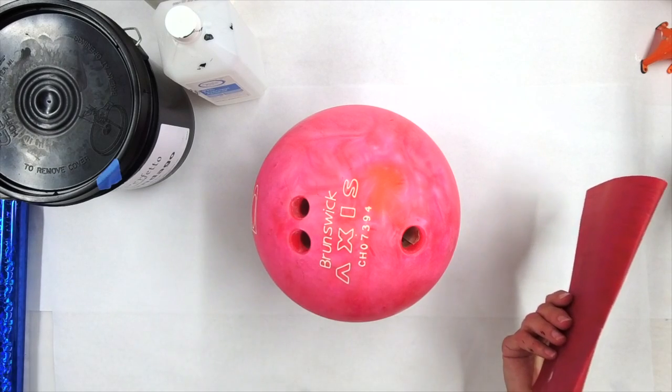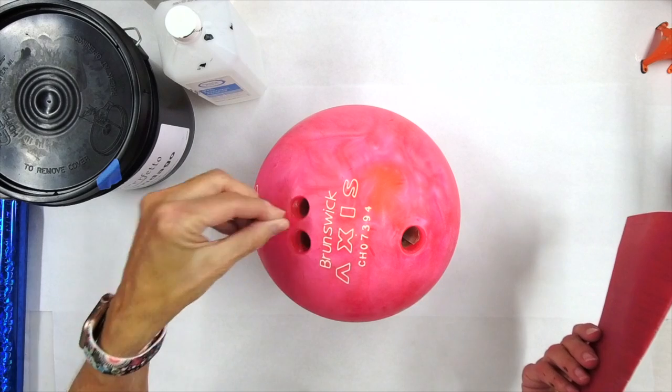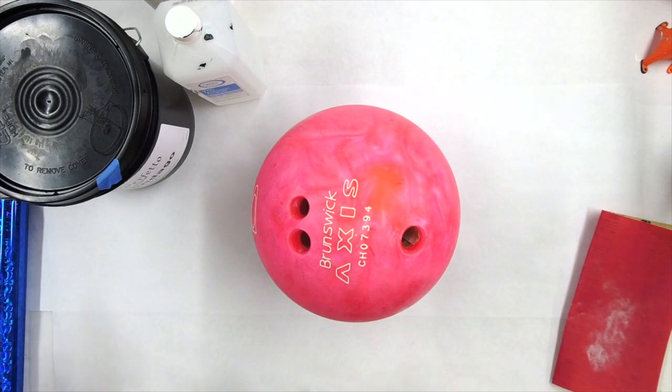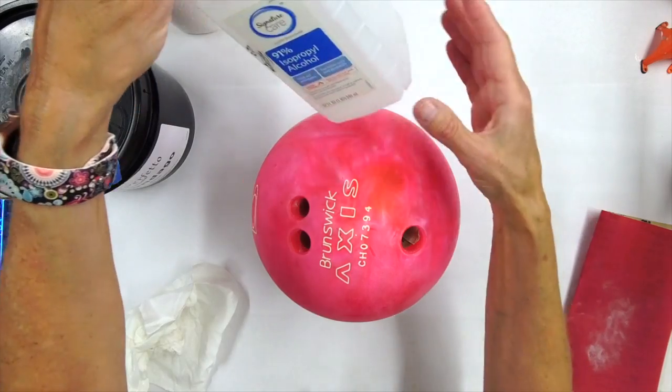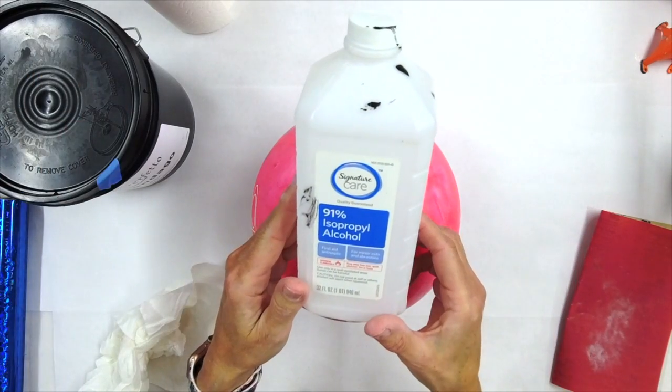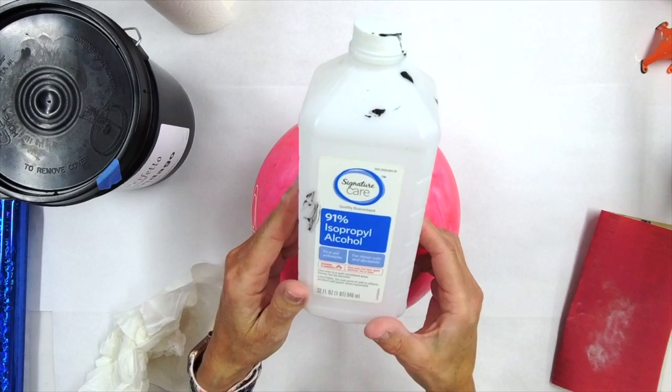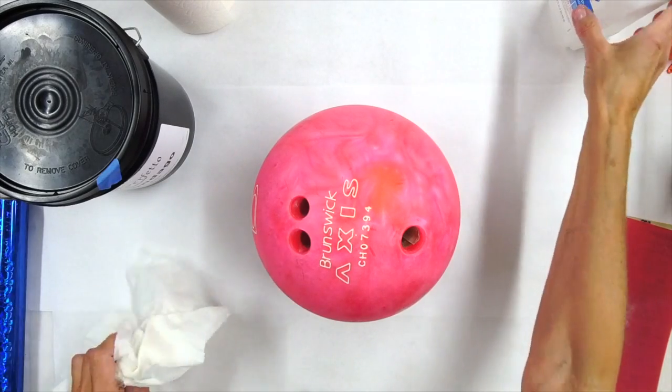I can see I didn't clean out the finger holes really well. A little dust in there. So once you do get this sanded down, just grab some 91% isopropyl alcohol and give it a super good cleaning.